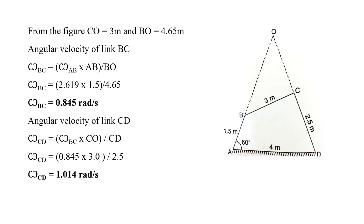The angular velocity of link BC is omega_BC = (omega_AB × length of AB) / BO = 0.845 rad/s. The angular velocity of link CD is calculated as omega_CD = (omega_BC × CO) / length of CD, giving omega_CD = 1.014 rad/s.